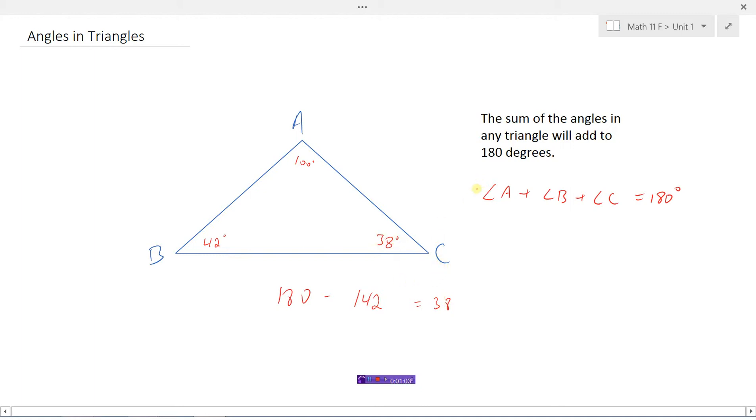So that's an important property for angles in triangles. The sum of all the angles equals 180 degrees.